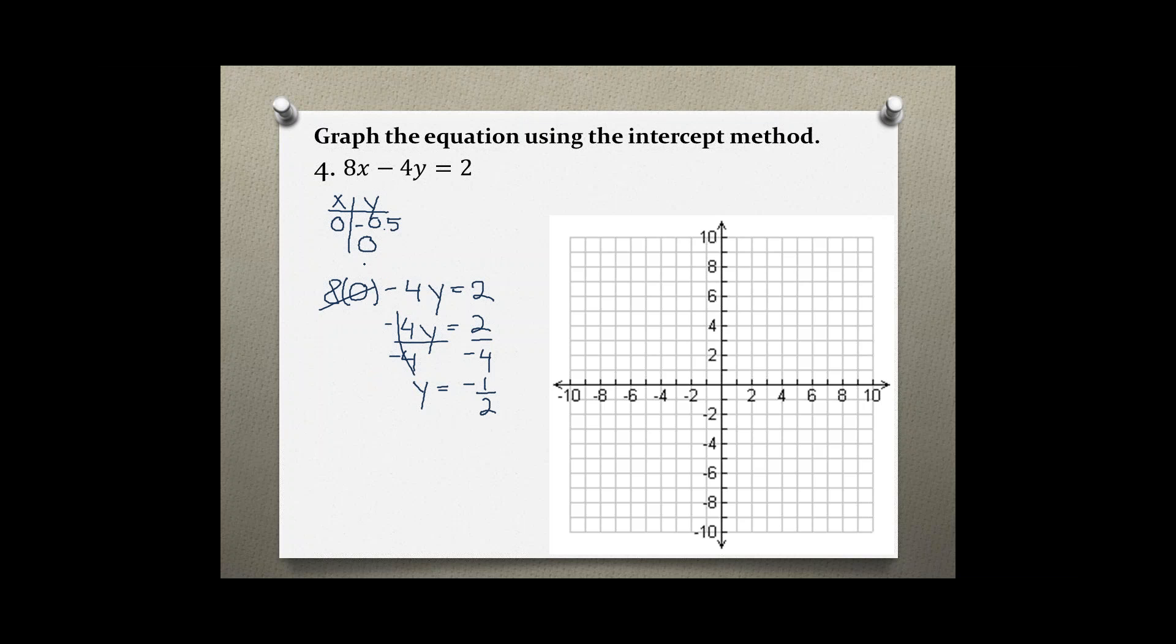Now let's find the x-intercept by plugging in a 0 for y. Again here, negative 4 times 0 is 0. We don't have to be concerned about it. And left is 8x equals 2. Divide by 8 on both sides and x equals 1 fourth, or 0.25.